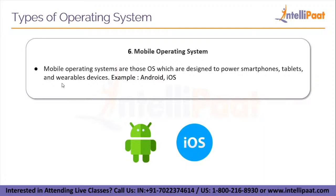The last type of operating system is the mobile operating system. Mobile operating systems are designed to power smartphones, tablets, wearables, and devices of a similar kind. Examples for this type include Android and iOS, although there are numerous examples — Android and iOS are the dominant ones.